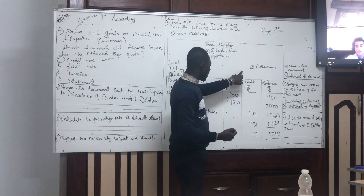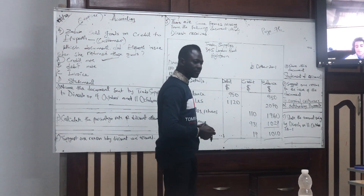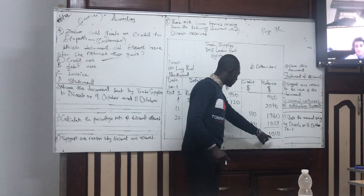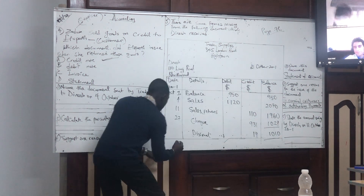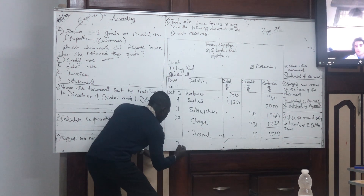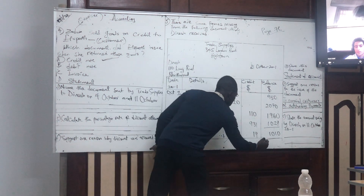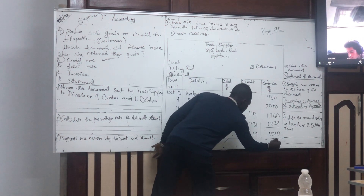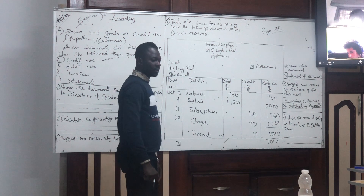Going to 31st of October, how much will Damage be owing? On 31st? It will be only 1-0, 1-0. Right?